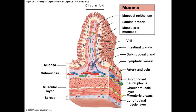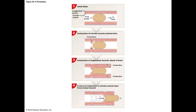Underneath that is the muscular layer, which has two different layers of smooth muscle. This muscle helps to churn the area — mechanically breaking down food — and also propels the substance forward toward the rectum, not toward the mouth. That's called peristalsis. Then finally we have the serosa, which is the same as the visceral peritoneum.